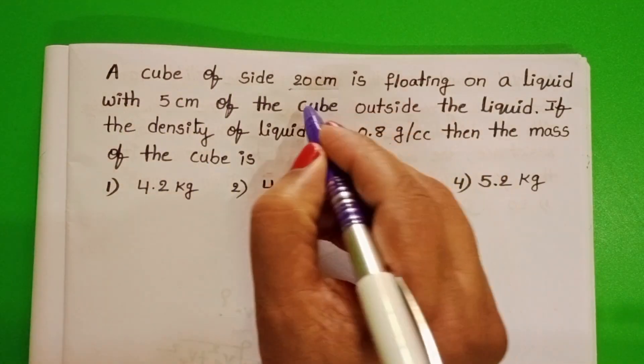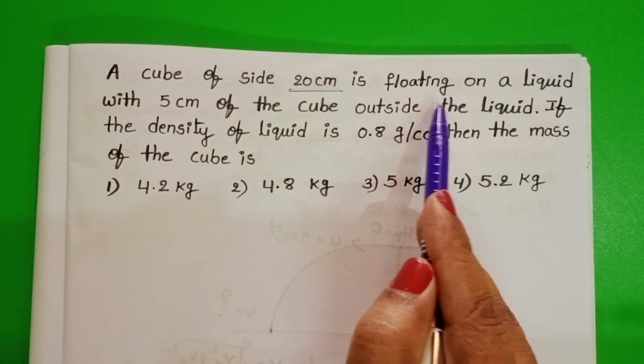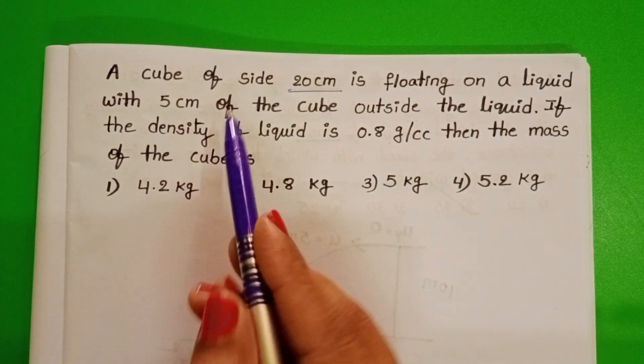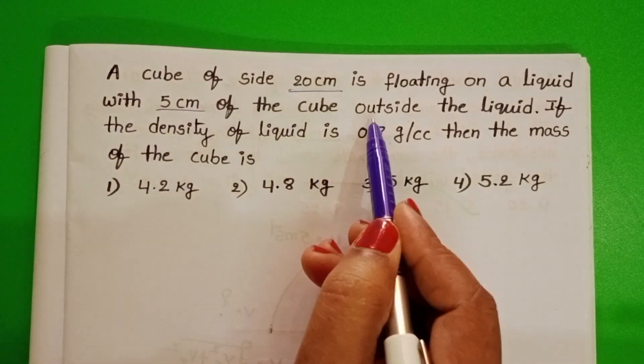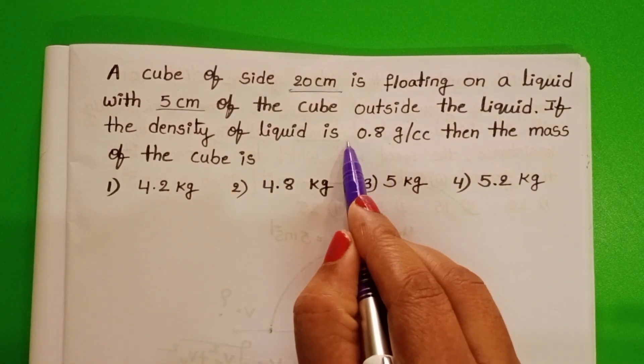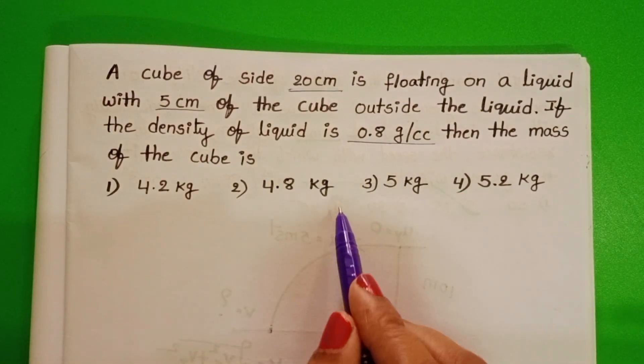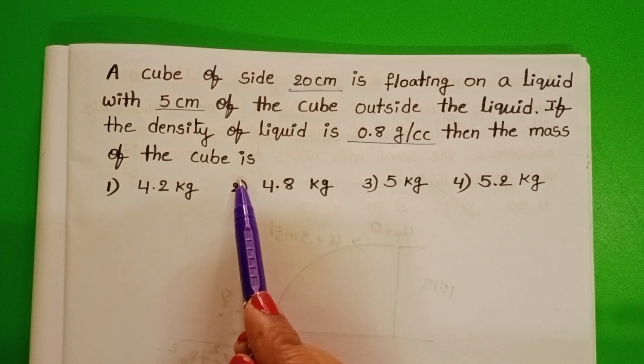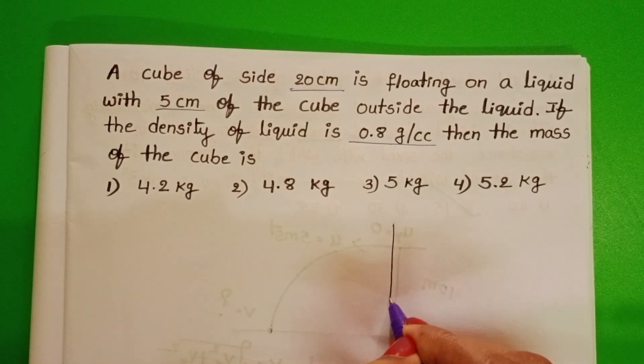A cube of side 20 cm is floating on a liquid with 5 cm of the cube outside the liquid. If the density of the liquid is 0.8 grams per cubic cm, then the mass of the cube is the given question.